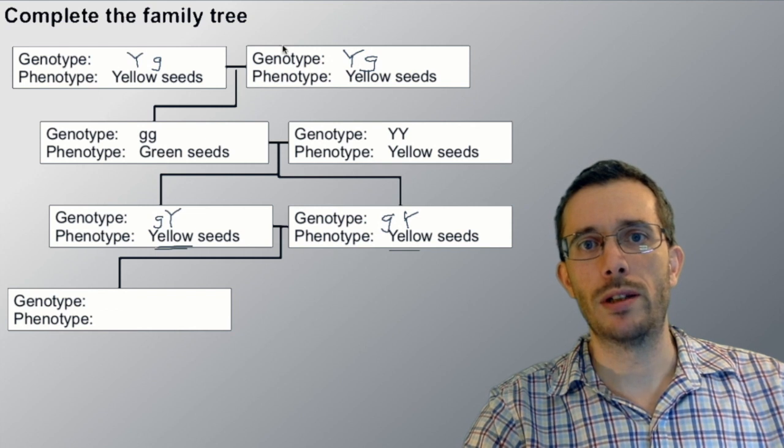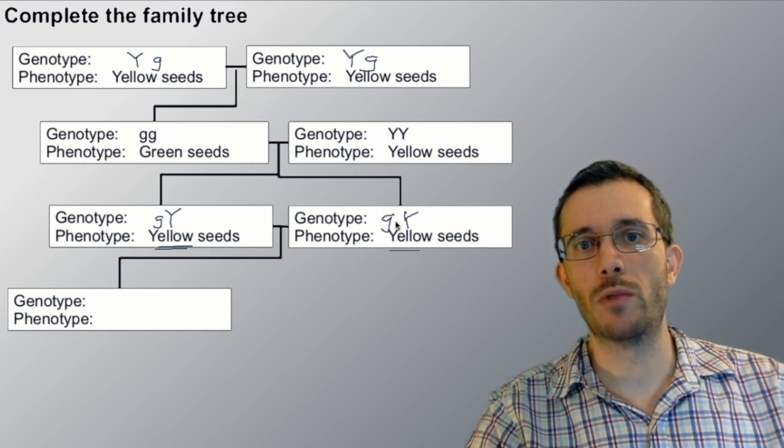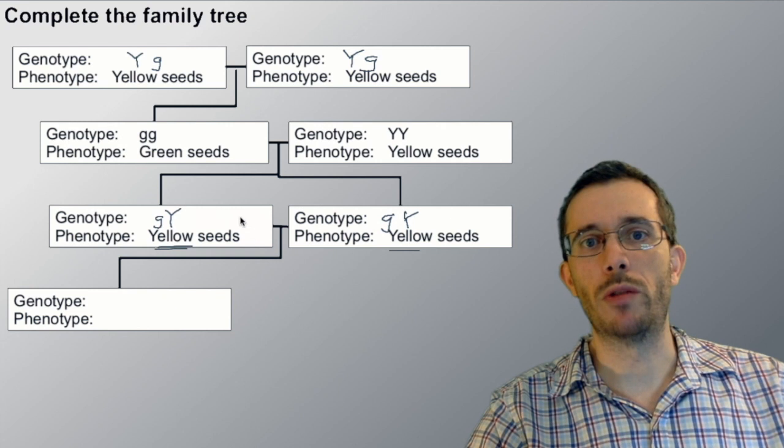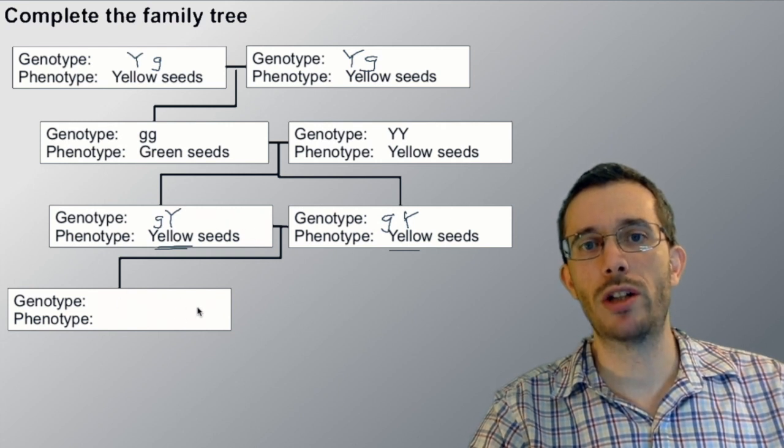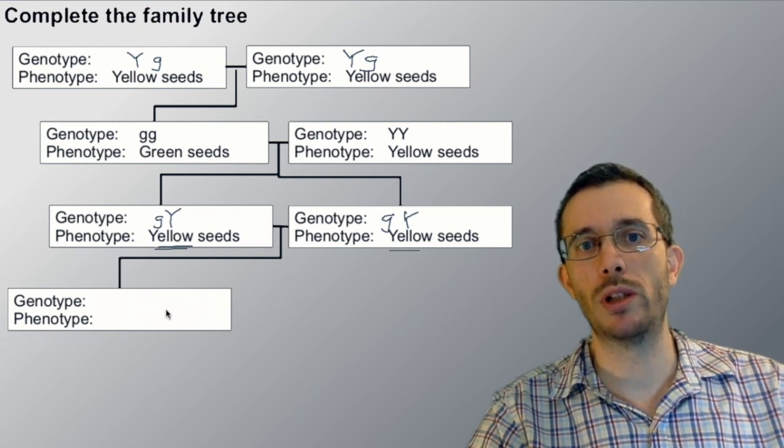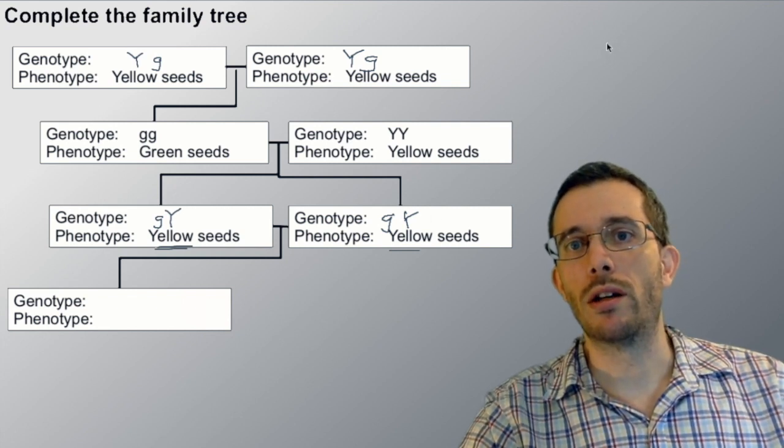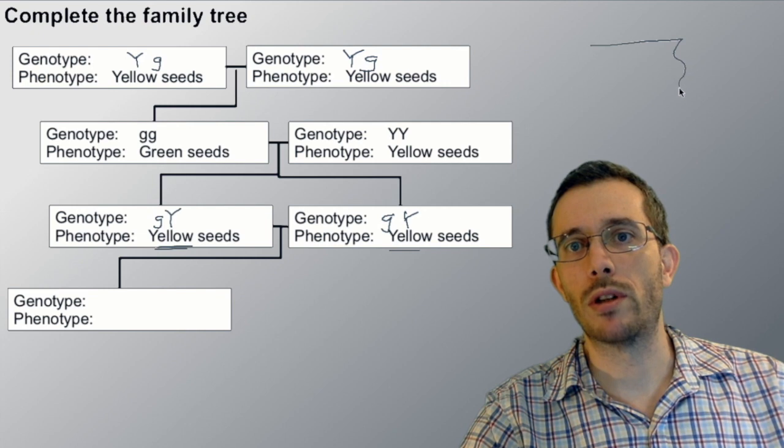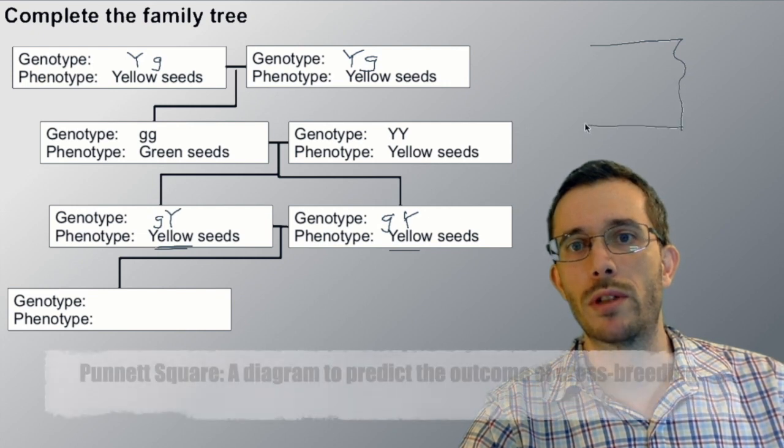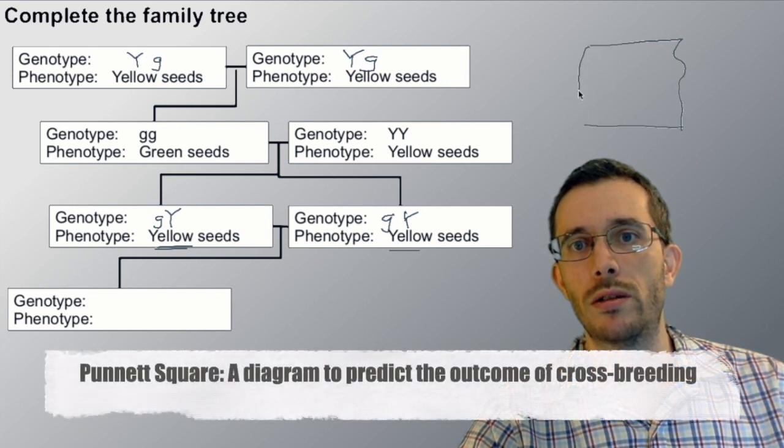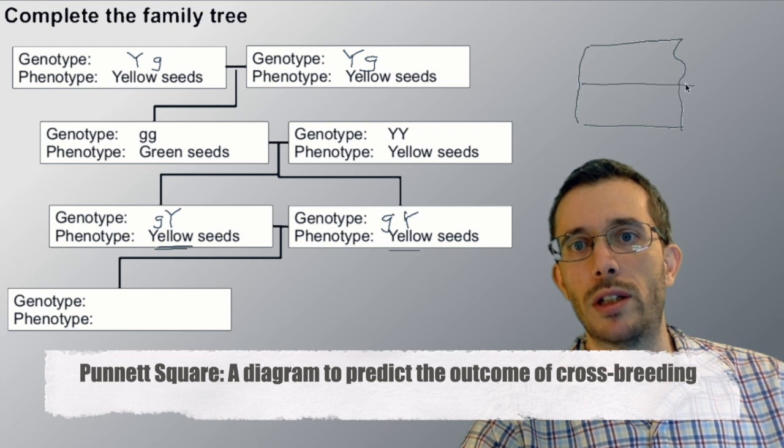If you look at it, the one up here is the same as the one down here. So what we're going to do in the last generation here, we're going to actually try to figure out all possible combinations. To do that we use the so-called Punnett square. It's called square because we're supposed to make a square.